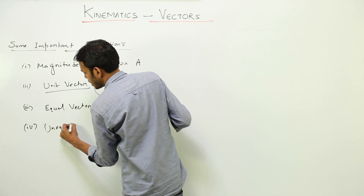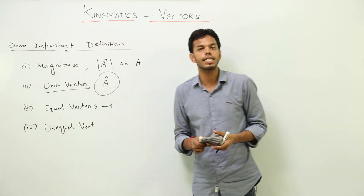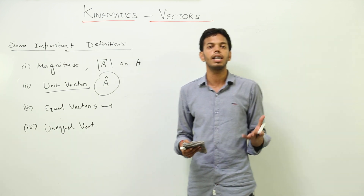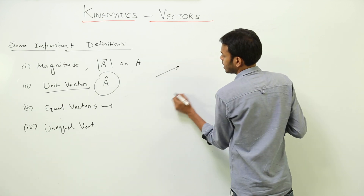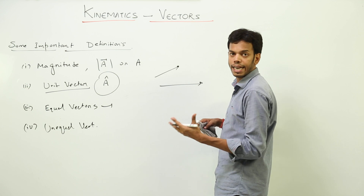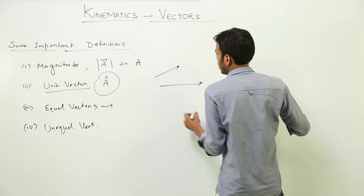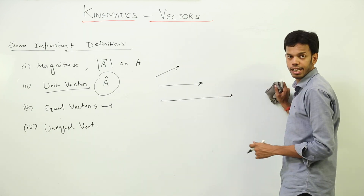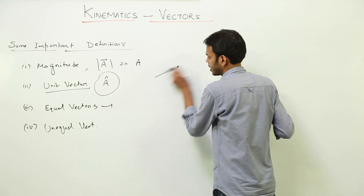Unequal vectors: two vectors are said to be unequal if either their magnitude or their direction is changed. For example, two arrows of different sizes and directions are unequal in both magnitude and direction. And two vectors that are same in direction but unequal in magnitude are also unequal vectors.